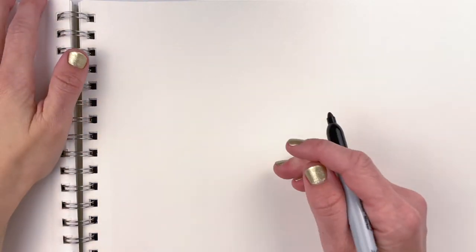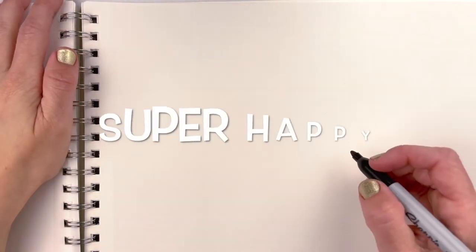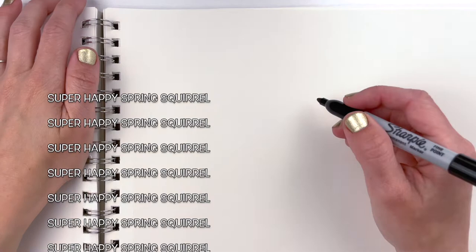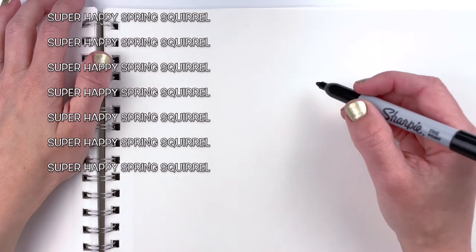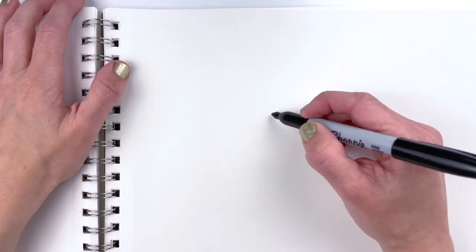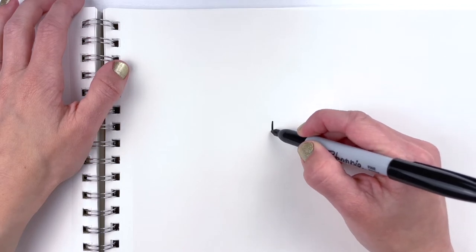Alright let's draw the super happy spring squirrel and if you can say that 10 times fast you get extra points. Alright so I'm gonna start with, I'm gonna go like this.